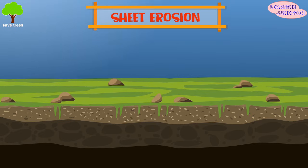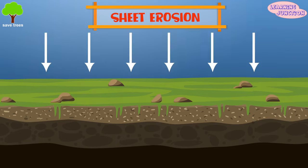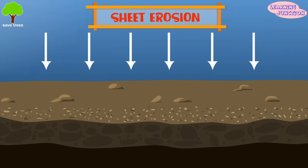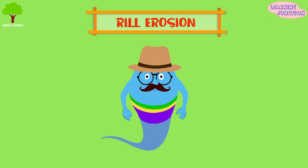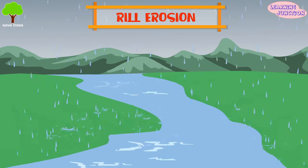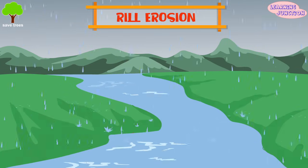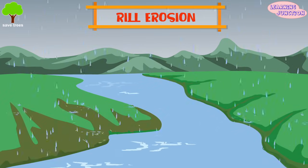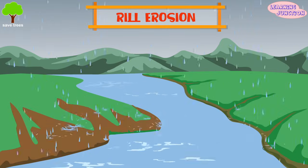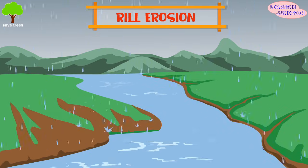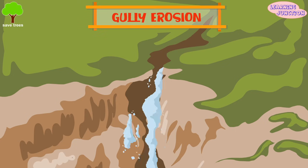Sheet erosion: it is the uniform removal of topsoil from the land surface by the action of wind. The next one is rill erosion: the most common form of erosion, which is observed during heavy rain through many streamlets and head cuts, is called rill erosion.